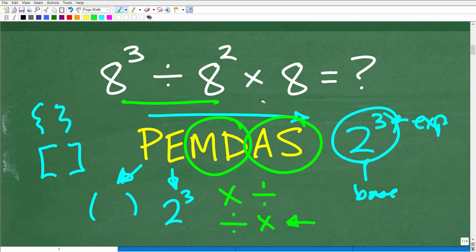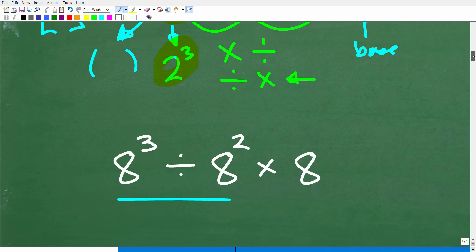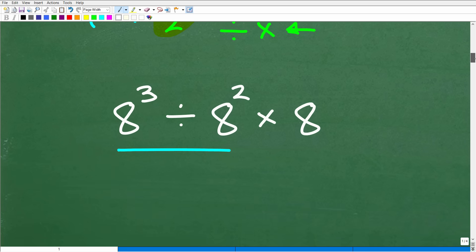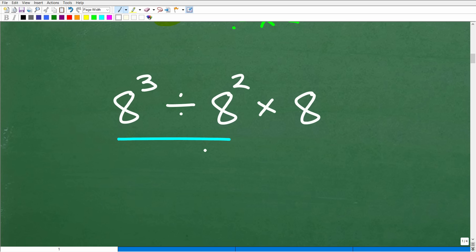So, now that we understand the order of operations, we know that we are going to have to do this first. Now, of course, you could do these powers. You might be saying, well, don't we have to do the powers first? Well, yes, but before we do that, we can actually rewrite this problem in a different way that will make it even that much easier. All right, so we're going to go ahead and talk about that right now. So, 8 cubed divided by 8 squared. This is what we have to do.